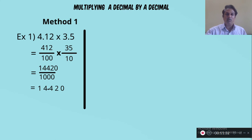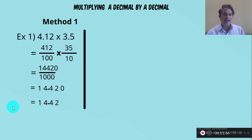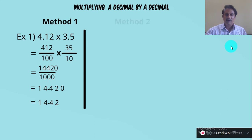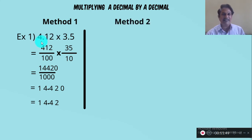So the answer is 14.420. And 14.420 equals 14.42 — it is an equivalent fraction, since adding a zero in the decimal part does not change the value. Now we will solve this example by the second method.